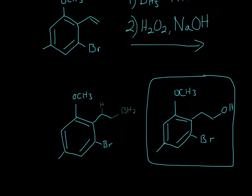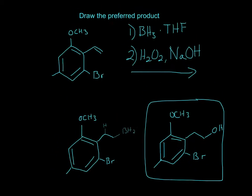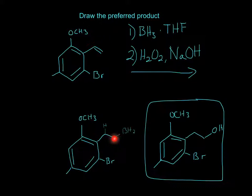For the alkene, BH3 and H will attach at the same time. Notice how BH2 assumes the less substituted spot, so BH2 is right here.